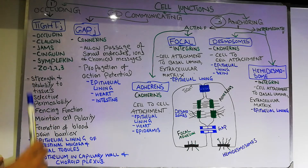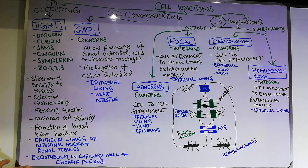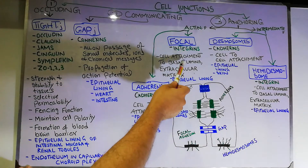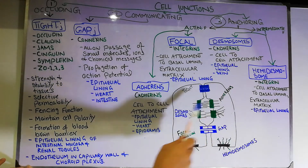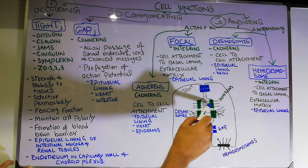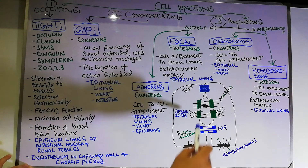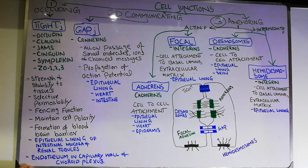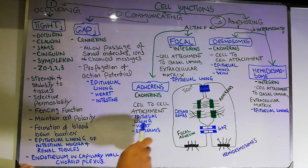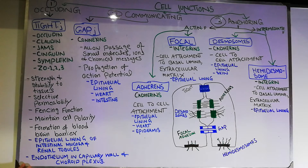The third type is anchoring junctions, which are further divided into two types: actin filaments and intermediate filaments. Actin filament junctions are further divided into adherence junctions and focal junctions, while intermediate filament junctions are divided into desmosomes and hemidesmosomes. Adherence junctions are cell-to-cell junctions — they attach one cell to the other. Proteins from one cell meet proteins from the other cell and get thickened, with actin fibers attached to them. They help in the formation of the epithelial lining and are also present in the heart and epidermis.